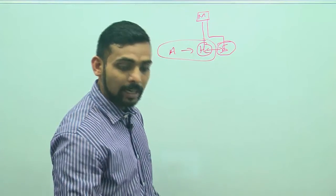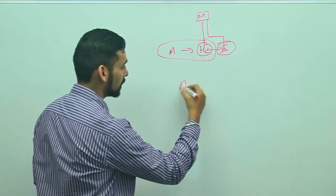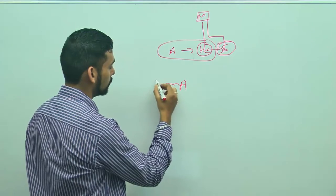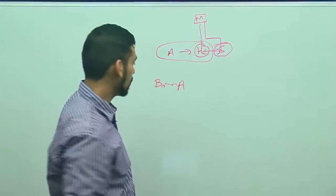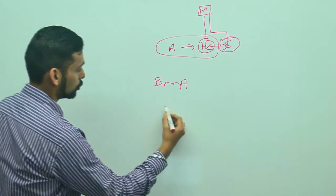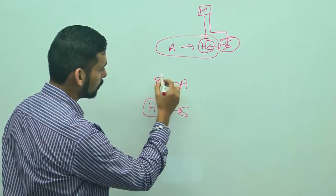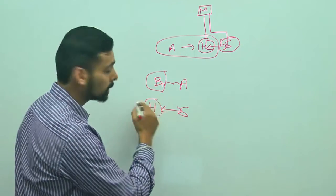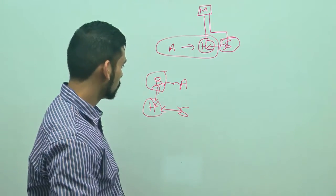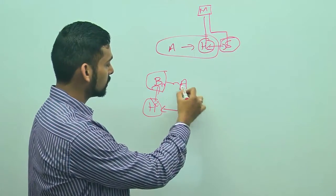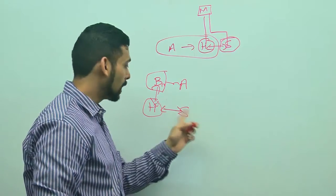Let me also see the second statement: Alicia's brother and Suman's husband are cousins. So I have Alicia, and Alicia has a brother. Alicia's brother and Suman's husband are cousins. This means Alicia is the sister of Suman's husband — again making Alicia the sister-in-law of Suman.